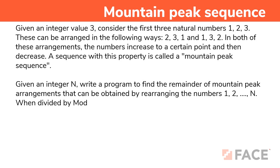Hello everyone. In this video, let us discuss about mountain peak sequence. Let us go for the problem statement. Given an integer value 3, consider the first three natural numbers 1, 2 and 3. These are arranged in the following ways: 2, 3, 1 and 1, 3, 2. In both of these arrangements, the numbers increase to a certain point and then decrease. A sequence with this property is called a mountain peak sequence.